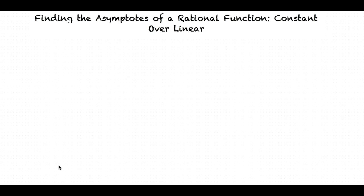This video will cover the topic: Finding the Asymptotes of a Rational Function — Constant Over Linear. Rational functions are defined by rational fractions in which both the numerator and denominator are polynomials. In this specific topic, we will focus on when the numerator is constant and the denominator is linear. In order to determine the vertical and horizontal asymptotes, we will need to examine what values make the denominator 0, as well as the degrees of the numerator and denominator.